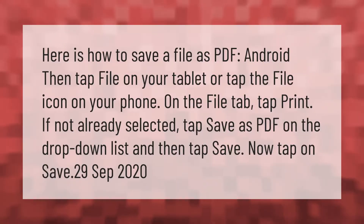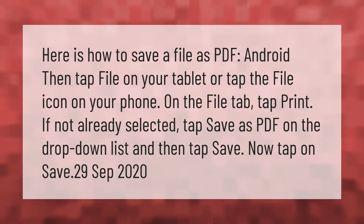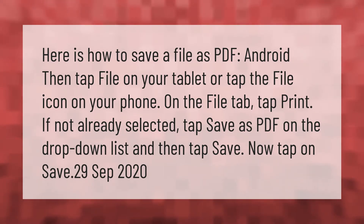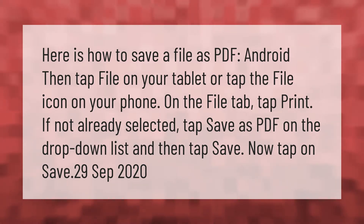Here is how to save a file as PDF on Android. Tap File on your tablet, or tap the file icon on your phone. On the File tab, tap Print. If not already selected, tap Save as PDF on the drop-down list, and then tap Save.